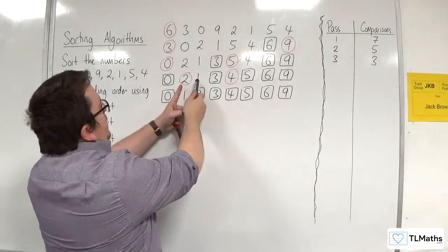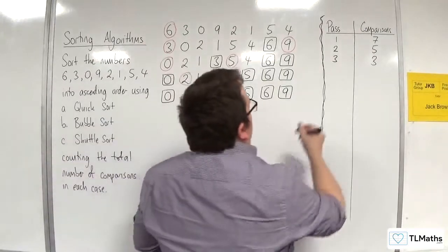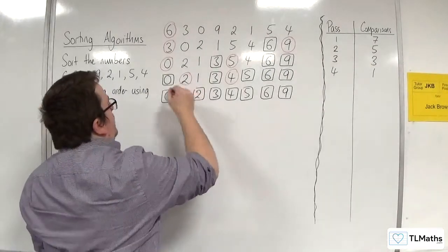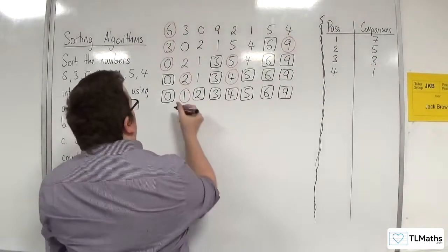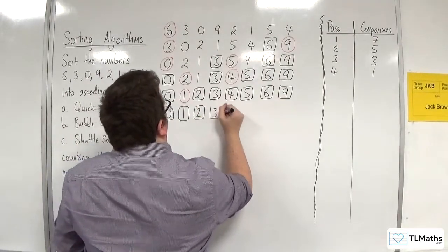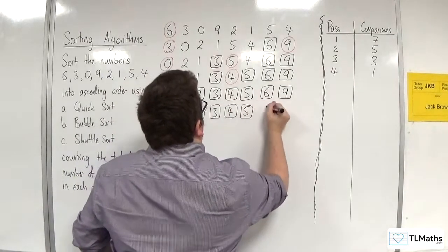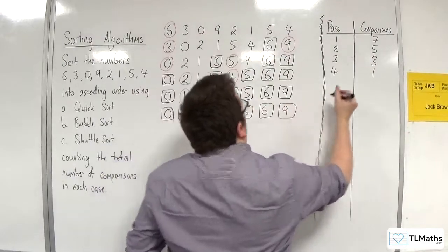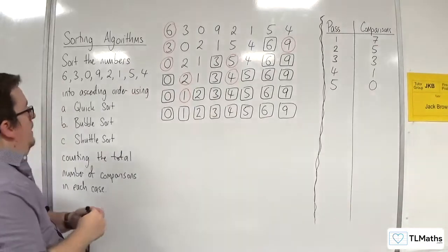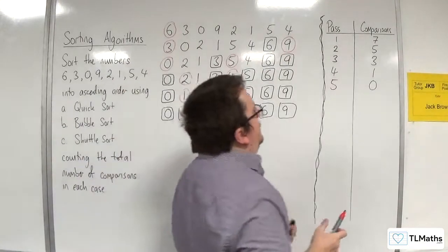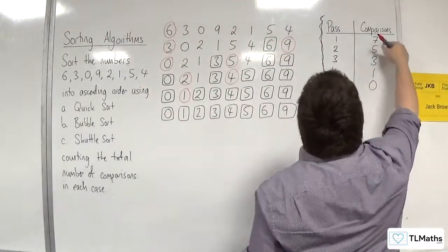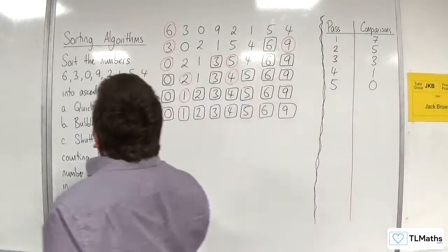2 got compared with 1. 4 got compared with nothing. So on the fourth pass, there was 1 comparison. Finally, 1 is going to get compared with nothing. So we've now got 0, 1, 2, 3, 4, 5, 6 and 9. On that fifth pass, there were 0 comparisons. So the total number of comparisons for the quicksort is 7 plus 5 plus 3 plus 1 plus 0 — that's 16 comparisons.